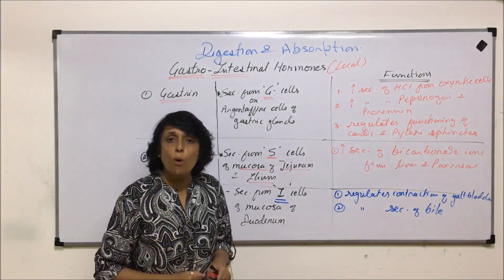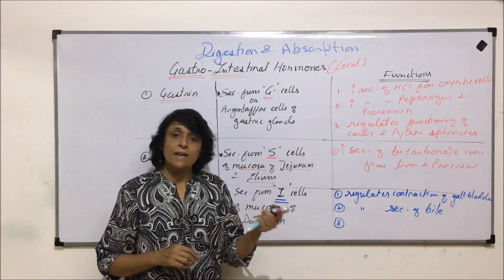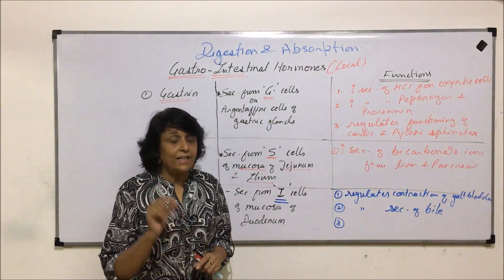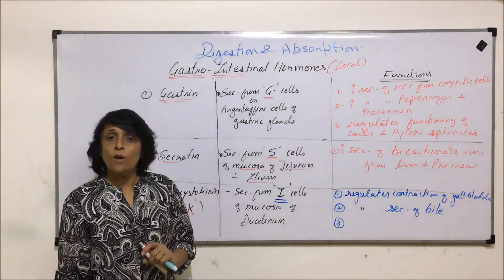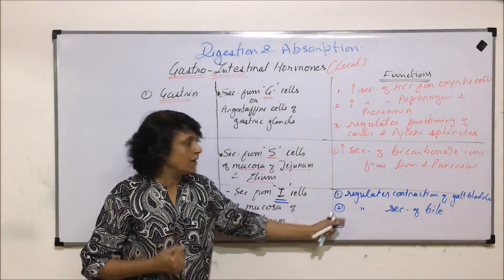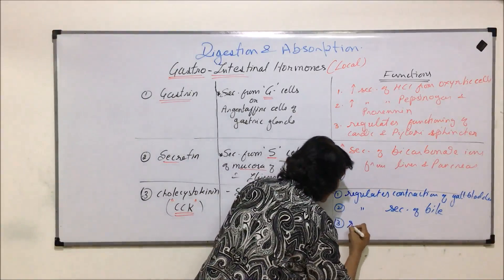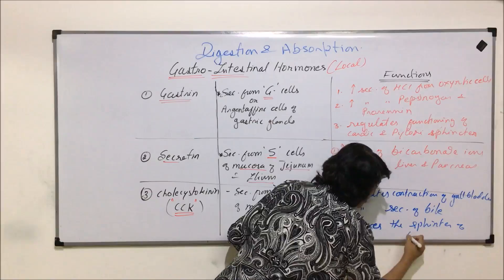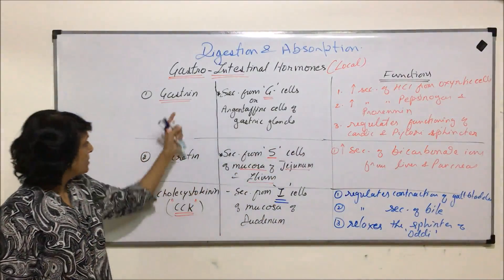When bile is released, the bile duct from the liver and the pancreatic juice duct join to form the hepatopancreatic duct, which dilates to form the ampulla of Vater. Its opening is guarded by the sphincter of Oddi. CCK also relaxes the sphincter of Oddi so that all the bile coming from contraction of the gall bladder can be poured into the duodenum.